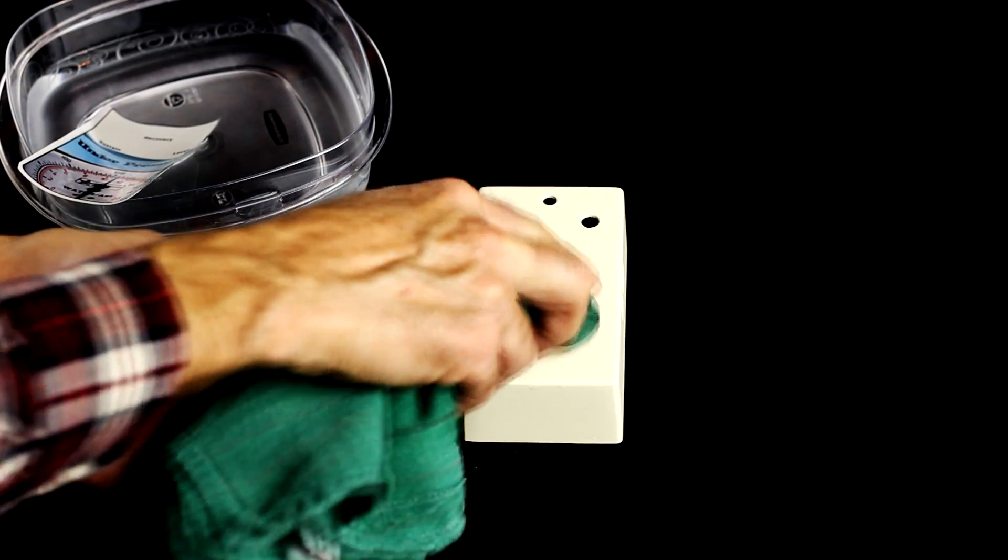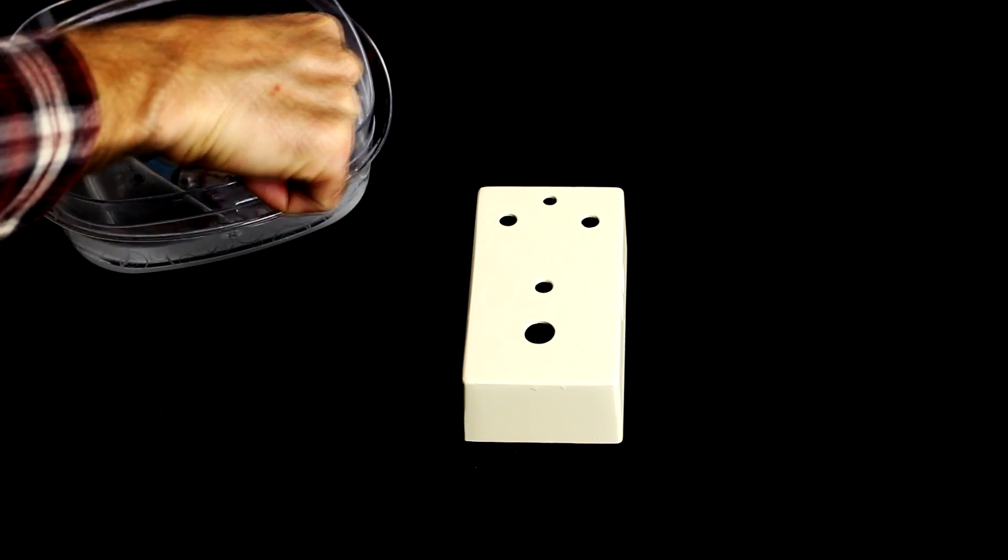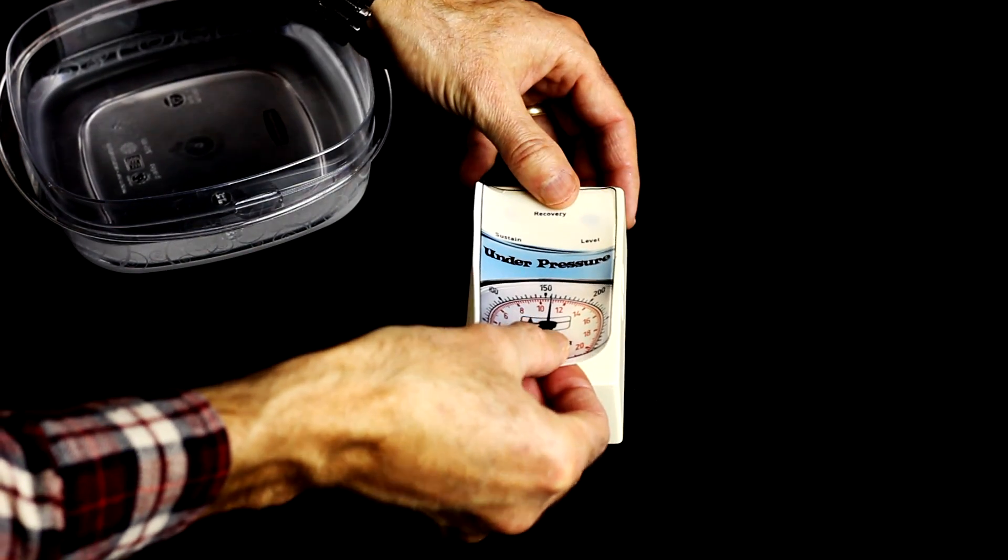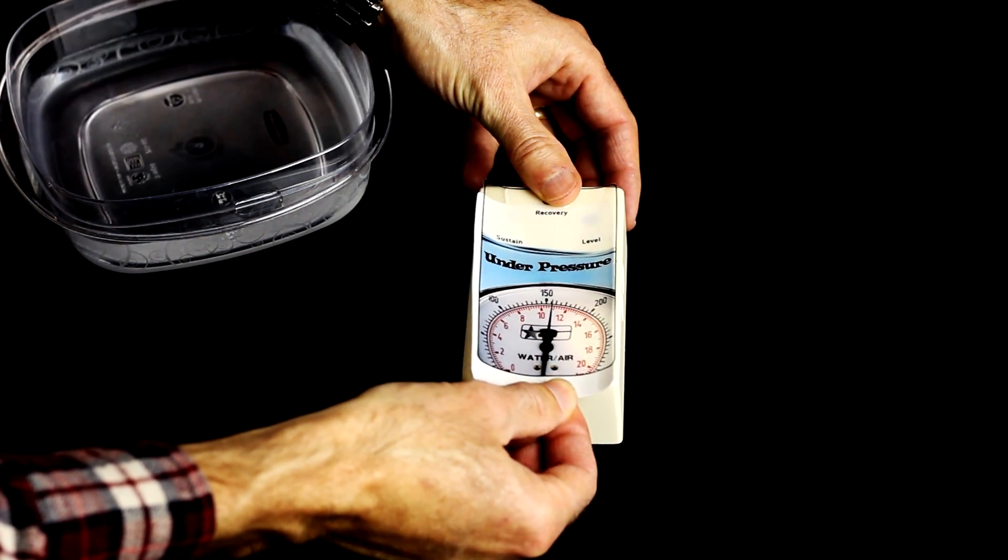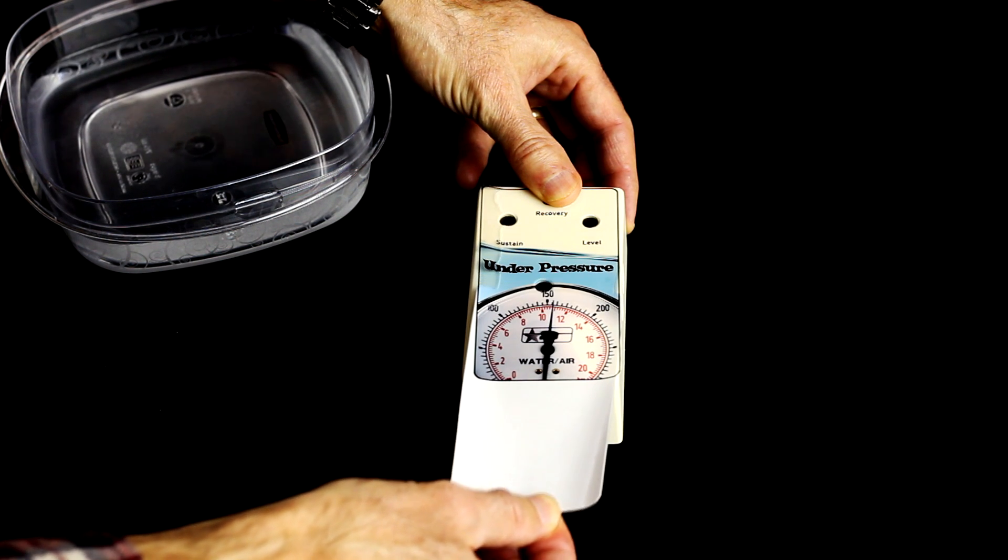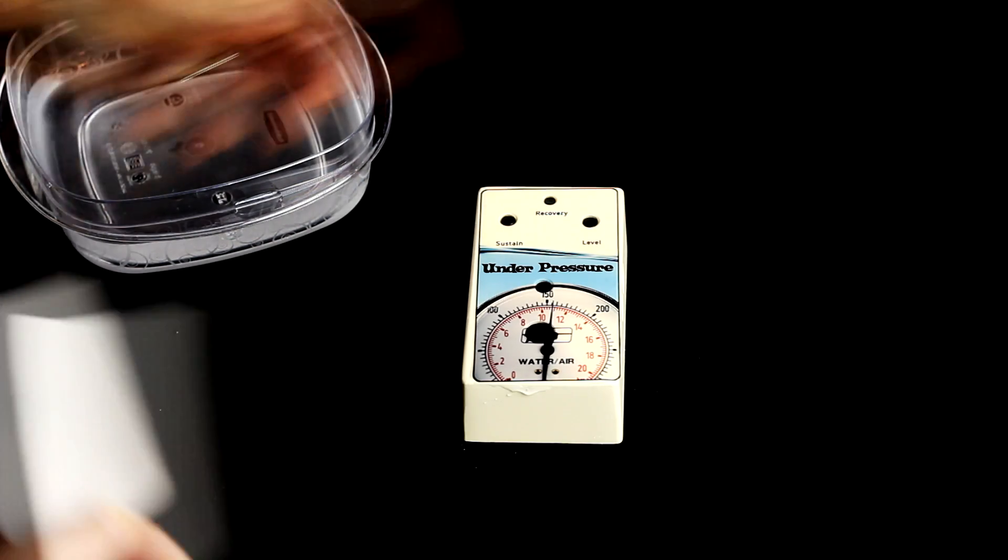When the decal is ready to apply, clean off the surface of the enclosure one last time and leave a little water on the surface to help things flow. Then roughly position the decal in the right place and gently slide the backing out from underneath the decal. Now you see why it's called a water slide decal.